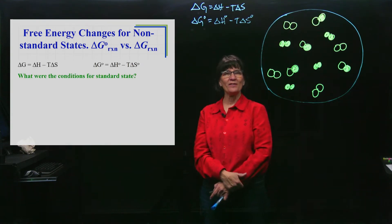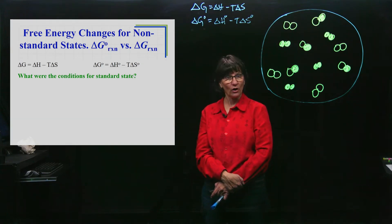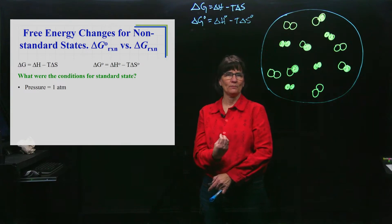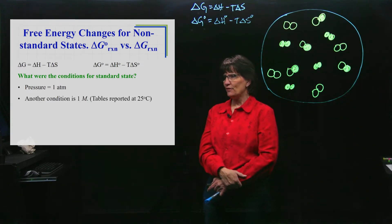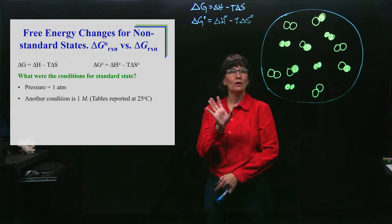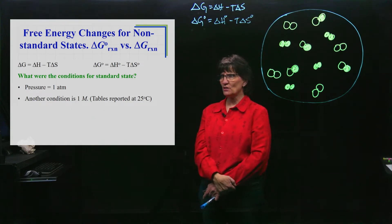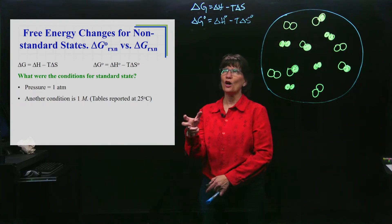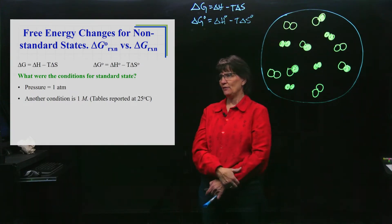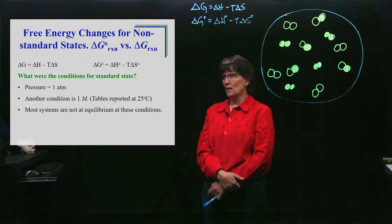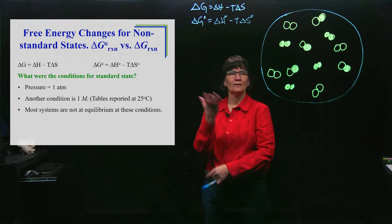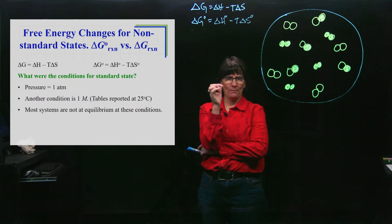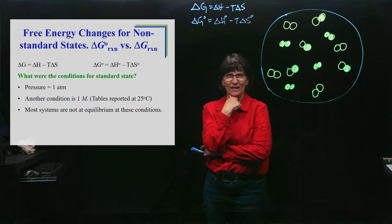Let's refresh your memory on standard state conditions. If it's in standard state conditions and it's a gas, the pressure is going to be one atmosphere. If it's in solution, it's one molar. Those are the standard state conditions. The tables are always reported at 25 degrees Celsius, so you can talk about a standard delta G at some other temperature if need be. Now, if everything is at one atmosphere, that's standard state conditions.